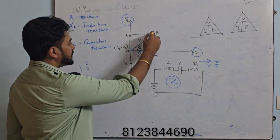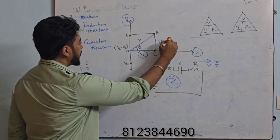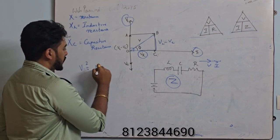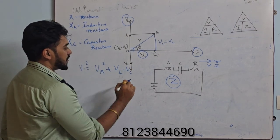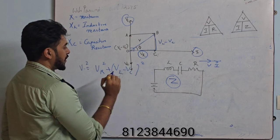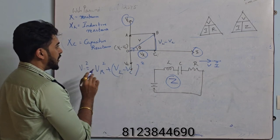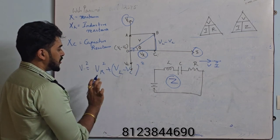VR² plus VC. But VC is something like VL minus VC. So V² equals VR² plus (VL - VC)² whole square. What is my V? It equals IR. But let us not touch any of those things.